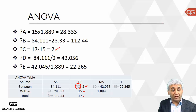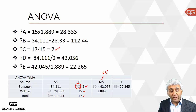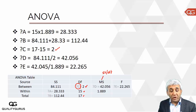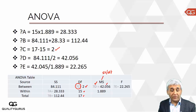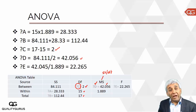Now looking at mean sum of squares — you know that mean sum of squares equals sum of squares divided by degrees of freedom. We have 84.11 as the sum of squares and 2 as the degrees of freedom, so D = 84.11 divided by 2, which gives you 42.056. That calculation was also easy.